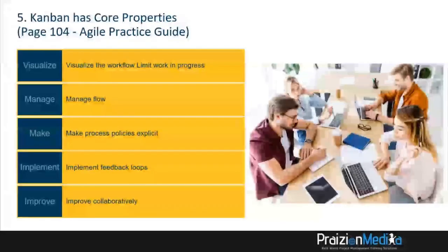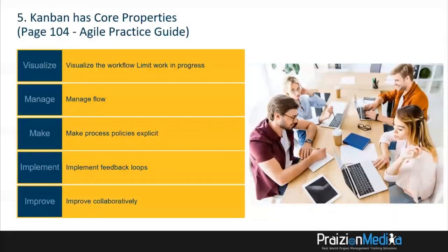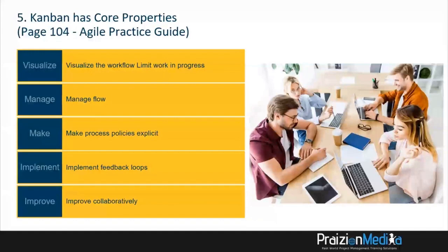Number five: Kanban has core properties. Visualize the workflow and limit your work in progress. Manage the flow. Make process policies explicit. Implement feedback loops and improve collaboratively.